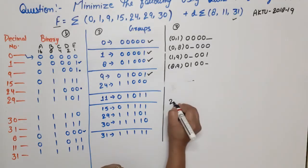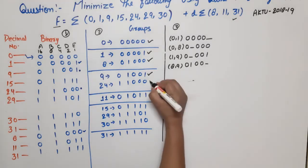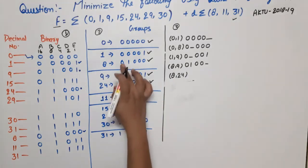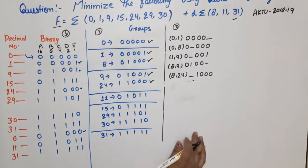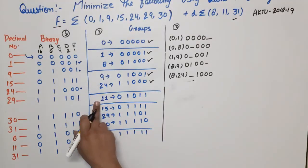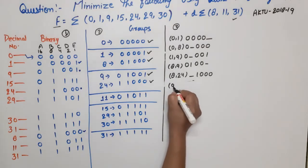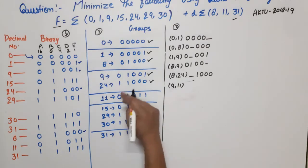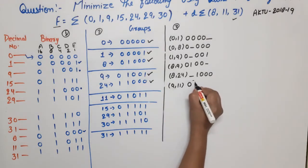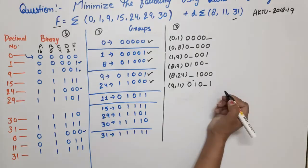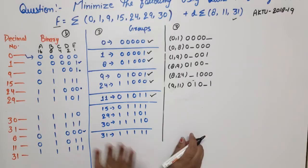Minterms 8 and 24 — difference is 16 = 2^4, possible. Result: 8,24 → -1000, first bit changes. Comparing group 3 with group 4: minterms 9 and 11 — difference is 2 = 2^1, possible. Result: 9,11 → 010-1, fourth bit changes. Mark 11 as used. Minterms 24 and 11 — difference is 13, not possible.